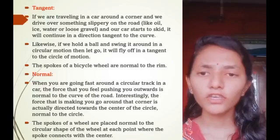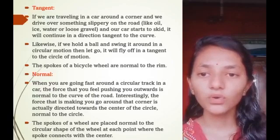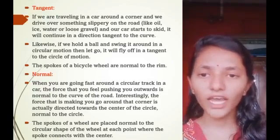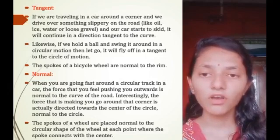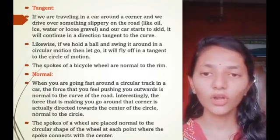Likewise, if we hold a ball and swing it around in a circular motion then let go, it will fly off in a tangent to the circular motion. The spokes of a bicycle wheel are normal to the rim.